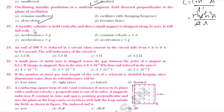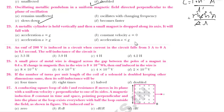A metallic cylinder is held vertically and a small magnet is dropped along its axis. It falls with acceleration, but as it falls downward, induced currents oppose the motion. So the acceleration will be less than g.